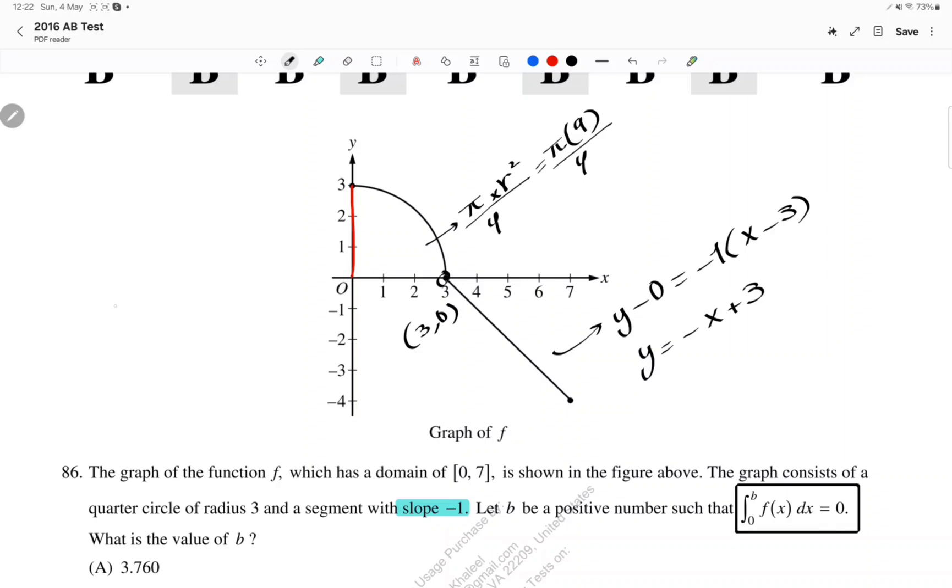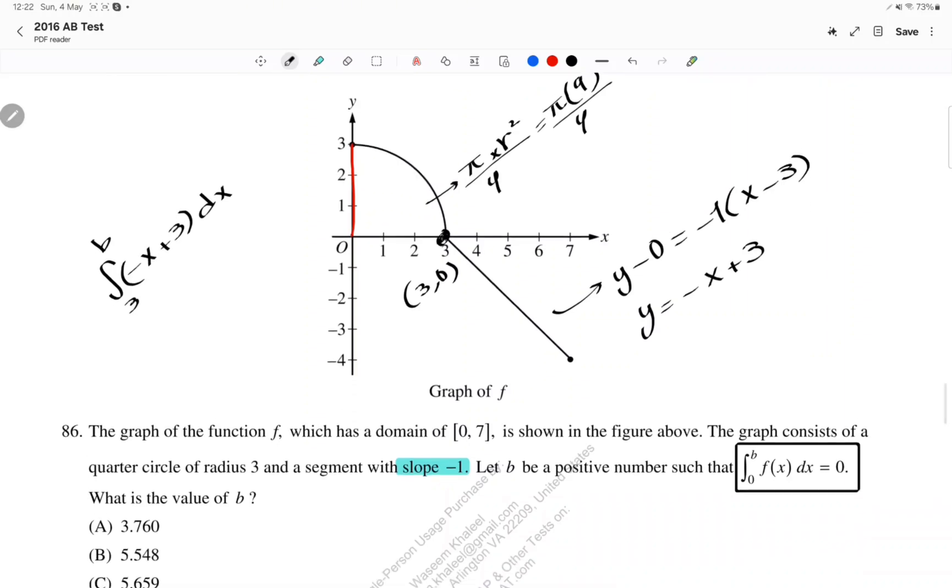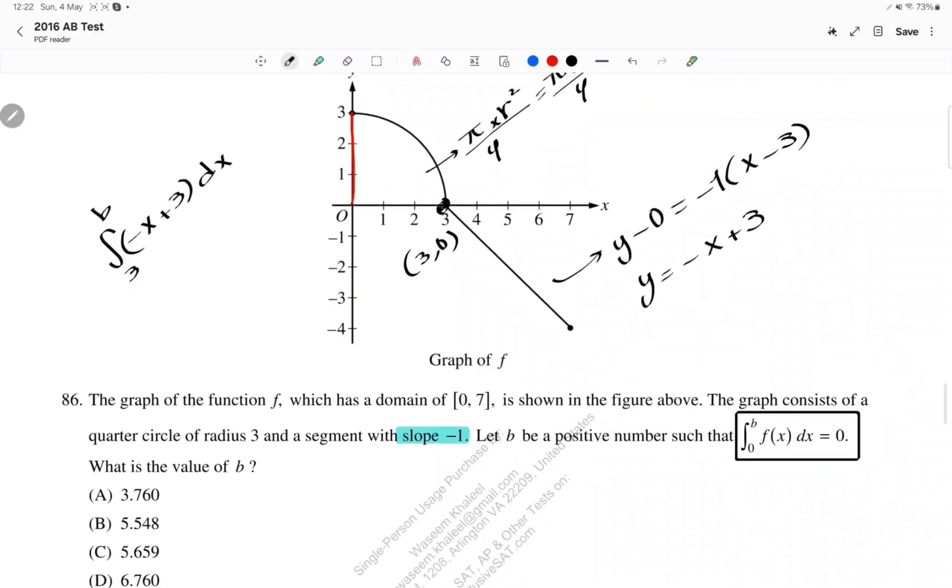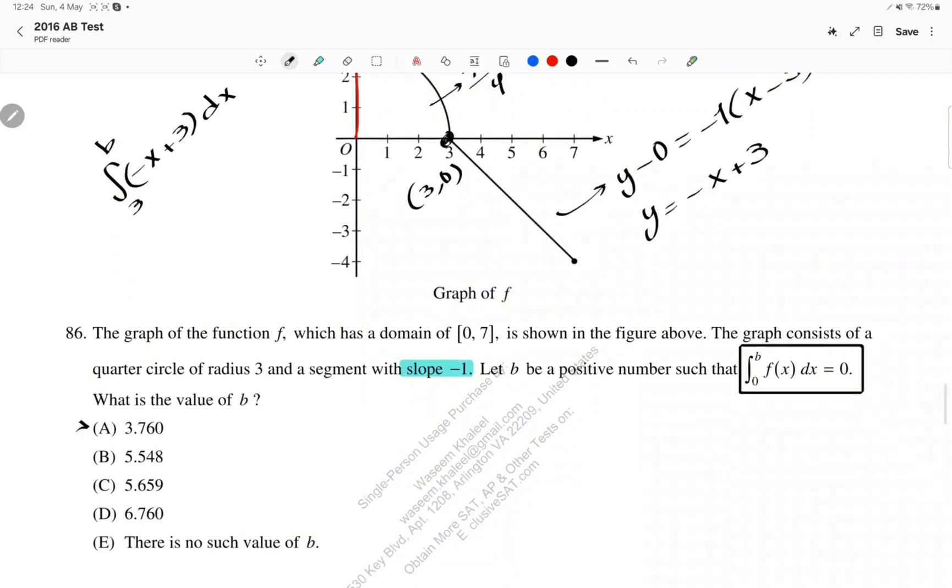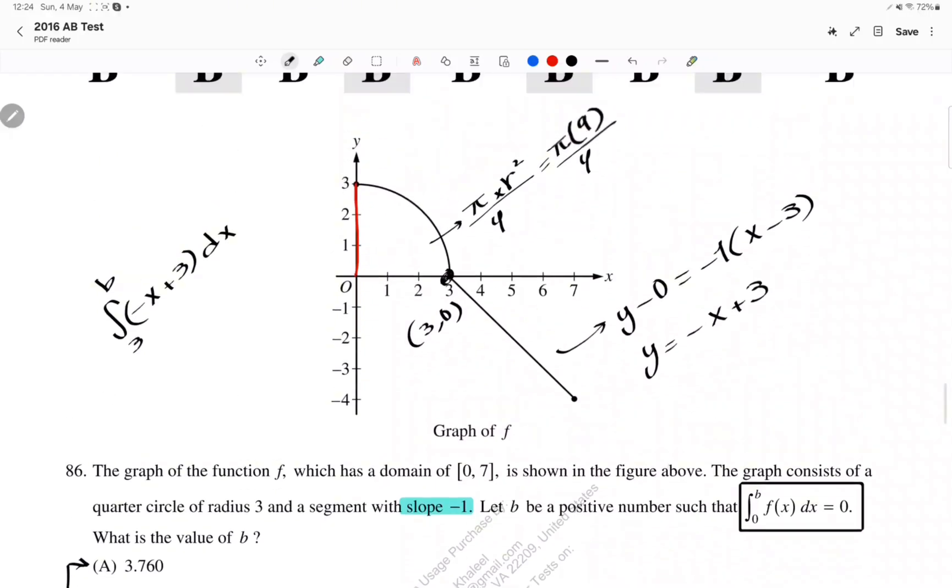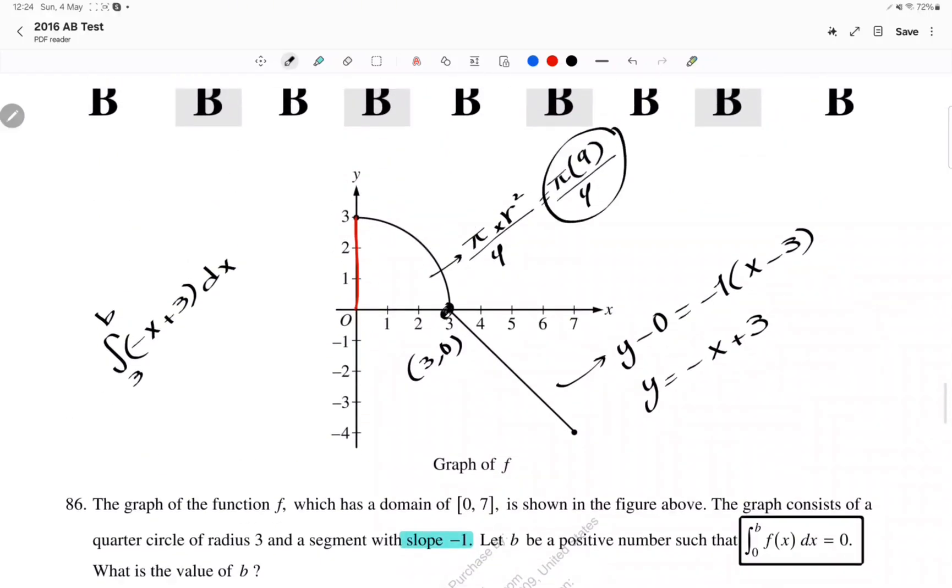And then we can integrate -x + 3 dx from the starting point of 3 to the ending point that we're about to find out. What I will have to do is plug in every single value here until my area is equal to 9π over 4.